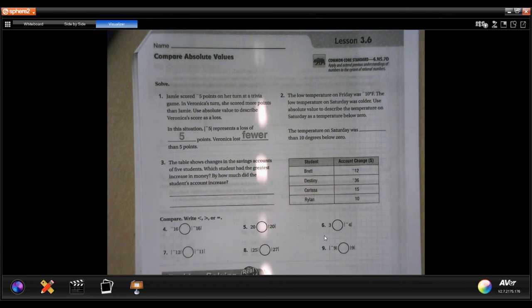Hey guys, welcome to sixth grade chapter three lesson six. We're going to get started with number two. It says the low temperature on Friday was negative ten degrees Fahrenheit. The low temperature on Saturday was colder. Use absolute value to describe the temperature on Saturday and the temperature below zero.